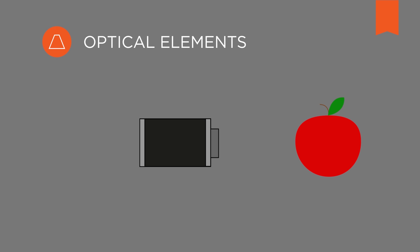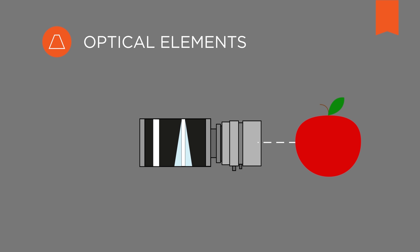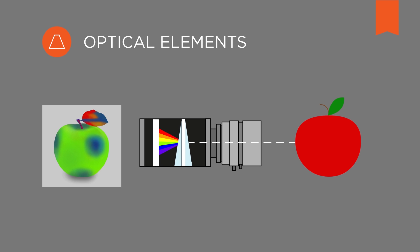Multispectral cameras with optical elements consist of a prism, a sensor, gratings, and lenses. The light enters the camera through a slit. The prism and gratings refract the light, and the line-scan sensor can then generate a multispectral image line by line. One disadvantage of this scanning type is that performance strongly depends on the alignment of the optical elements — calibration is crucial and can be very costly.